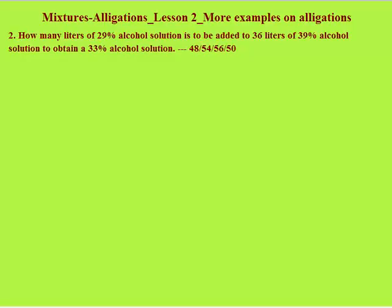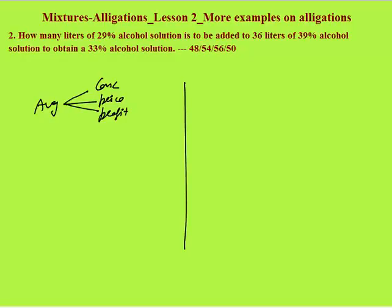Next example: how many liters of 29% alcohol solution is to be added to 36 liters of 39% alcohol solution to obtain a 33% alcohol solution? Wherever the average concentration, average price, average profit, or average interest is given, you can use allegation — but only for mixing two things, not 3, 4, or 5. In this case also, the average concentration is given, so you can apply the allegation.